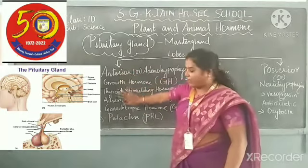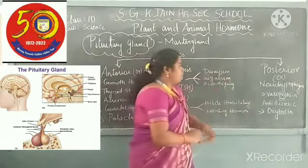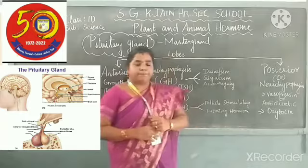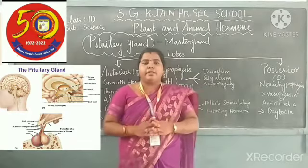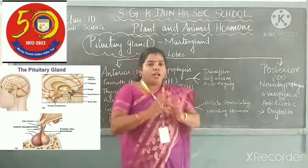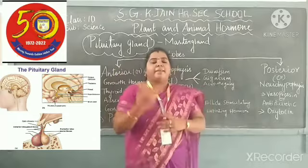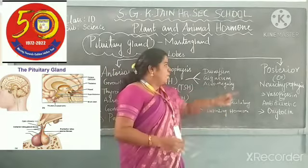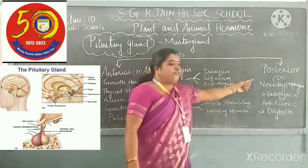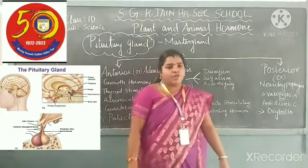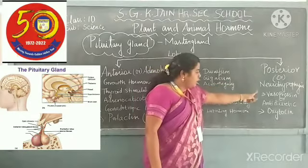Next, we discuss about the posterior lobe. The posterior lobe is located at the back side. Two lobes are present: the front lobe is the anterior lobe and the back lobe is the posterior lobe. The posterior lobe is otherwise called the neurohypophysis, which is very important. The posterior lobe is divided into two types.